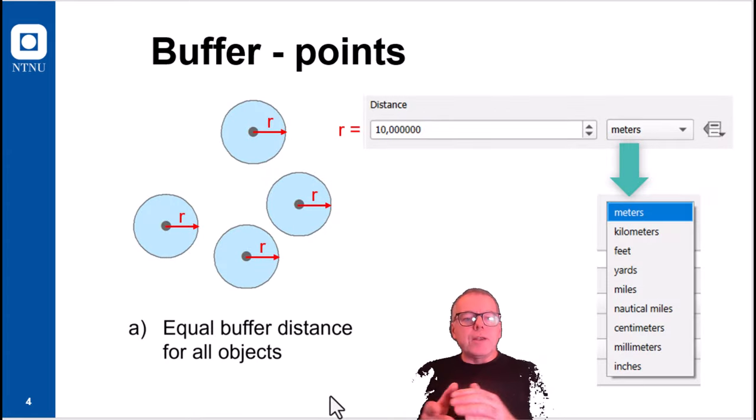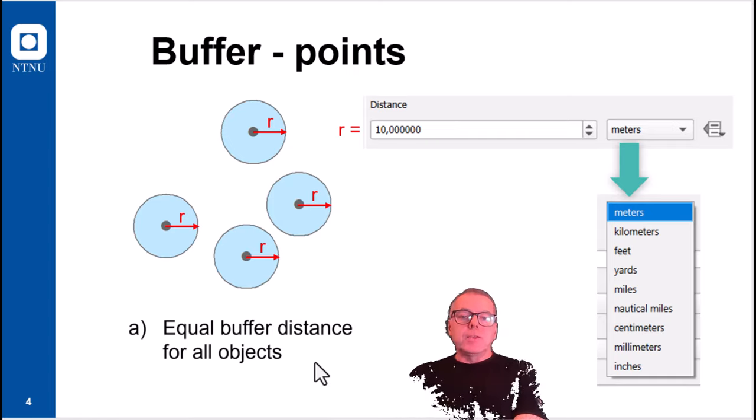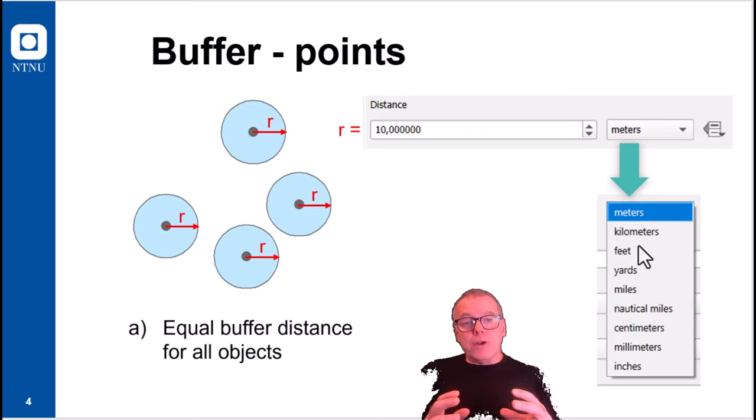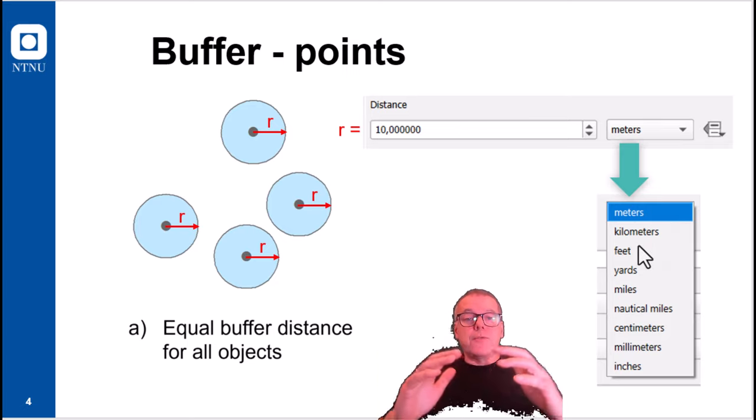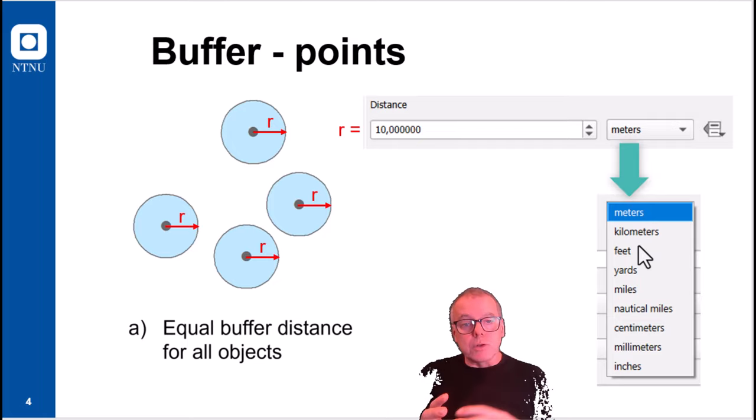By default, when you buffer point objects, these will come with equal buffer distance for all objects. So you set the distance and you choose the units, which could be meters, kilometers, or whatever. And for points, the default buffer form will be circles, thus the distance would be the radius of the buffer.